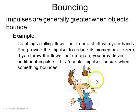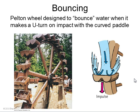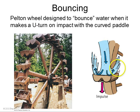Bouncing is when not only do you stop the momentum, you also reverse it. Consider a falling flower pot: if you provide an impulse to reduce the momentum to zero and then throw the flower pot up again, you provide an additional impulse. This double impulse occurs when something is bouncing. That's why Pelton wheels are designed to produce a greater impulse to turn the wheel by bouncing the water upwards — not only does it stop the water, but it reverses the momentum, requiring twice the impulse and exerting twice the impulse on the wheel itself.